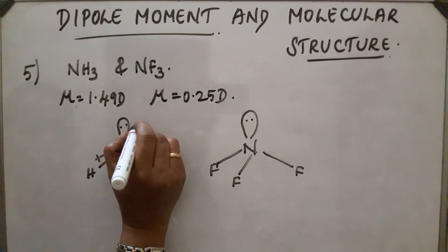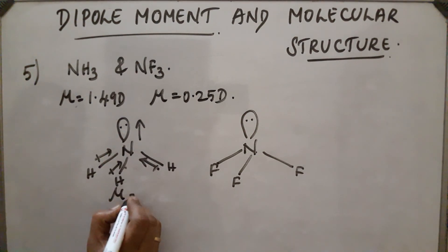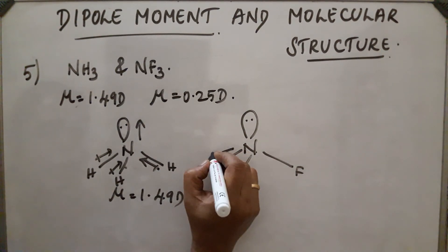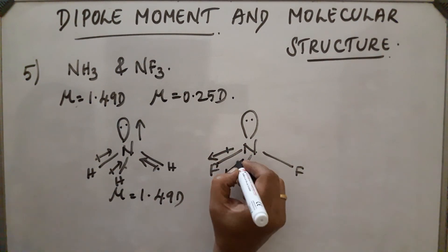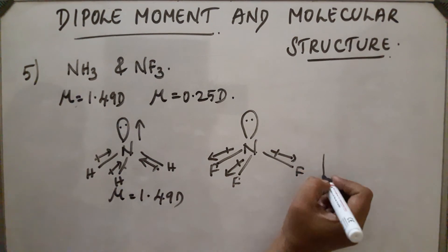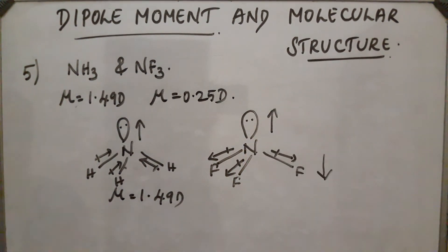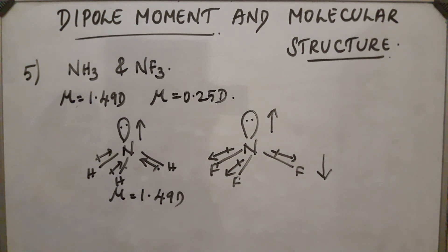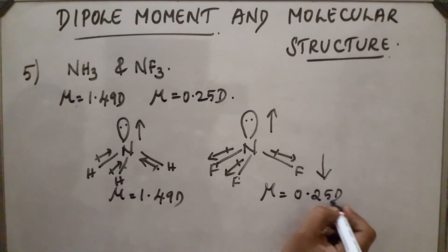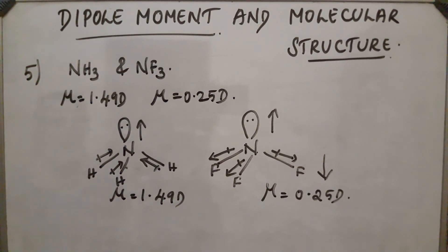Due to the orbital dipole in NH₃, the resultant dipole is very high, found to be 1.49 D. But in the case of NF₃, fluorine is more electronegative than nitrogen, so the electrons shift in the opposite direction. The dipoles of the three NF bonds are in one direction and the orbital dipole is in the opposite direction, so they cancel each other and the net dipole is reduced to 0.25 D. This is why, even though both have pyramidal structure, their dipole moments are different.